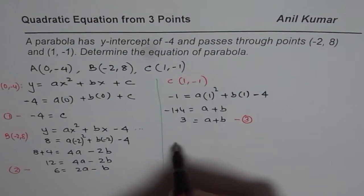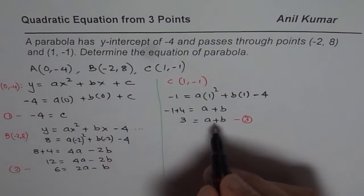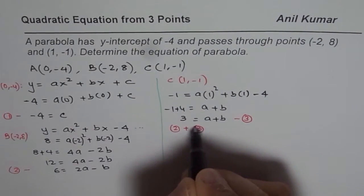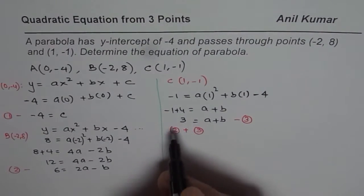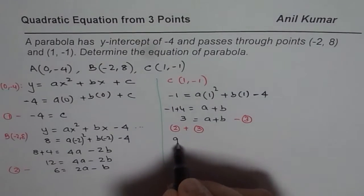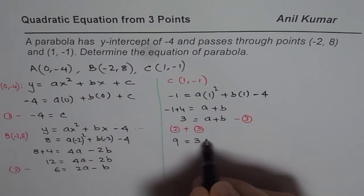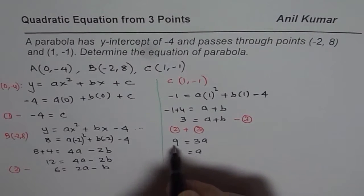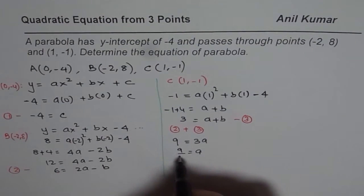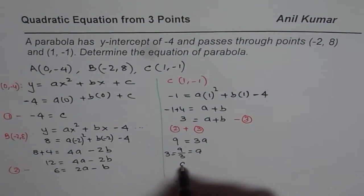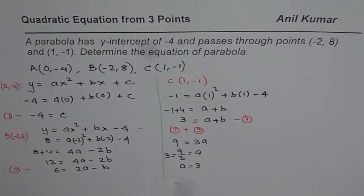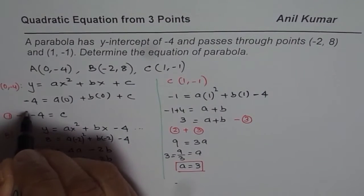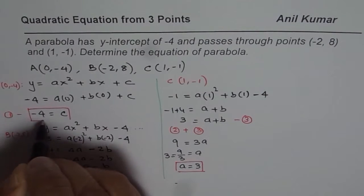From equations 2 and 3 we can solve for A and B. Adding equation 2 and equation 3: 6 plus 3 is 9 on the left. On the right, 2A plus A is 3A, and B minus B is 0. So we get 3A equals 9, which gives A equals 3.